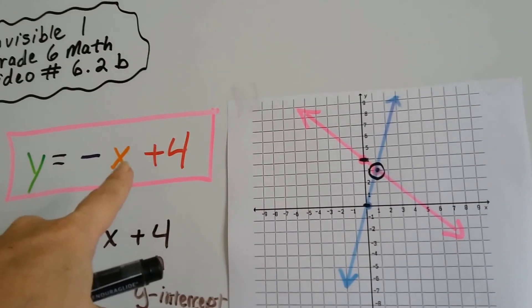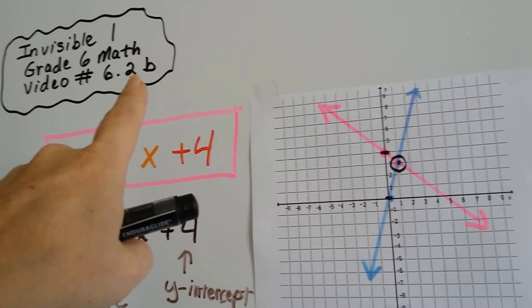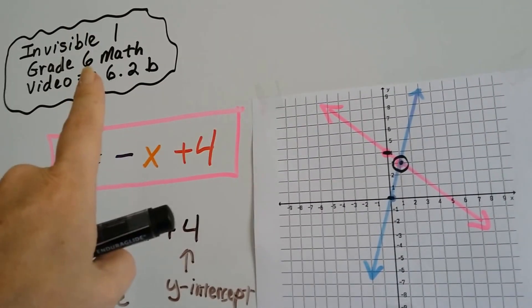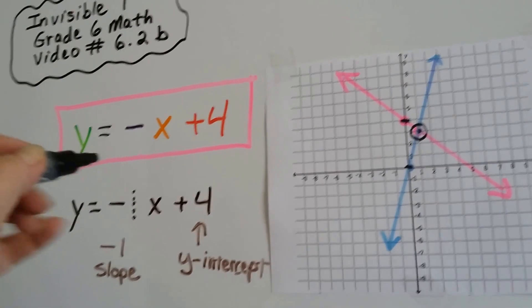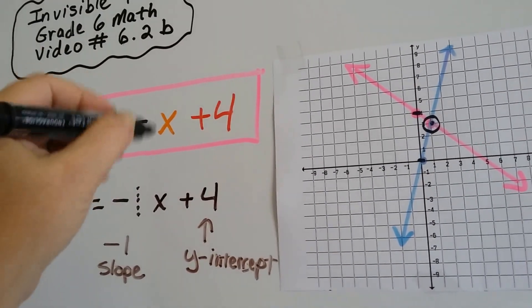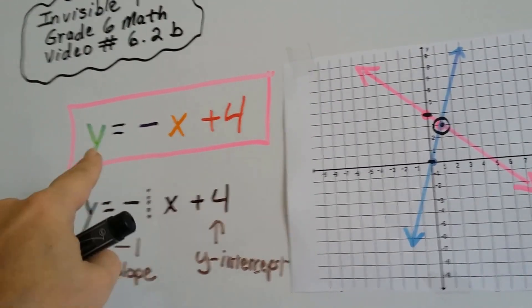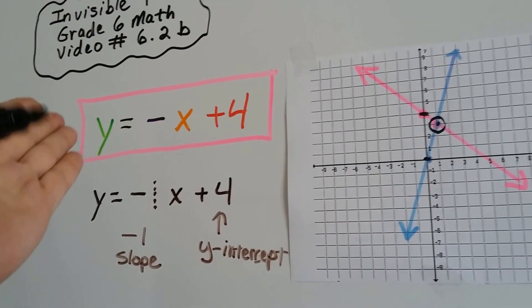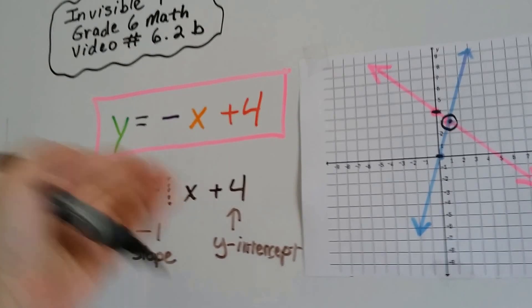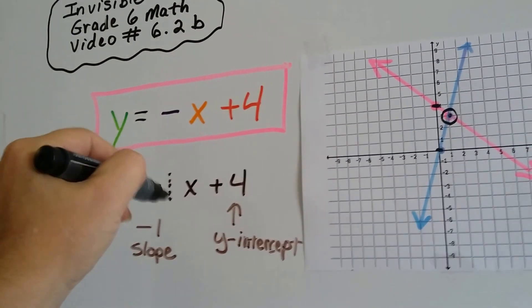Now it says negative x. Well, do you remember from 6th grade math, in video 6.2b? If you haven't seen it, you really should. We talked about our friend the invisible one. There's actually an invisible one in front of that x. It's negative 1x. Whenever you see a variable by itself, there's actually a 1 in front of it.